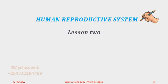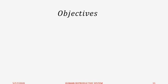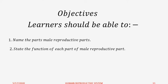Welcome to our second lesson on human reproductive system. This is a continuation of what we had learned earlier on in female reproductive system. This time our objectives will be: the learners should be able to name the parts of the male reproductive parts, and the learners should also be able to state the function of each part of the male reproductive parts.